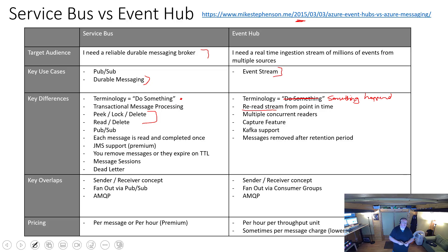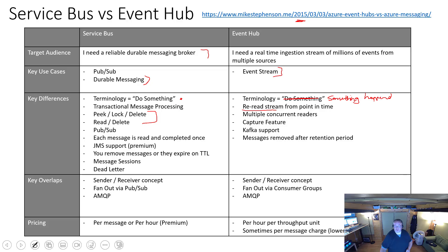With Pub/Sub on Service Bus, you can send a message to a topic subscribed by multiple subscribers, with rules about who gets what message. For example, if the message came from System A, Receiver 1 gets it; if from System B, Receiver 2 gets it. Event Hub is different: you have concurrent readers, so you have a consumer group for each reader. They read the stream and get all of the messages from it.